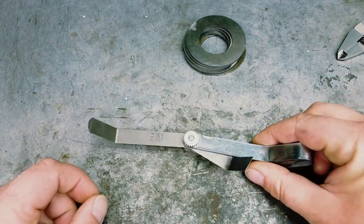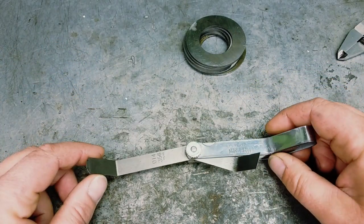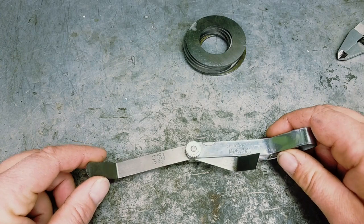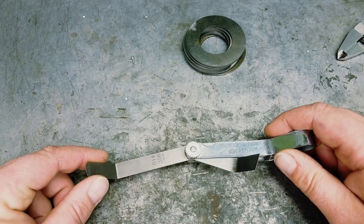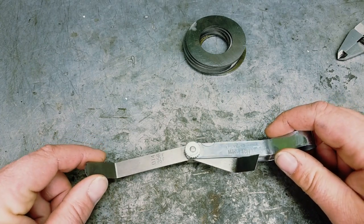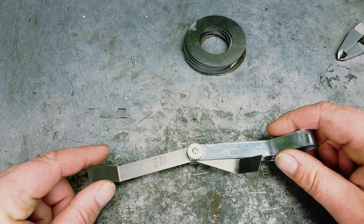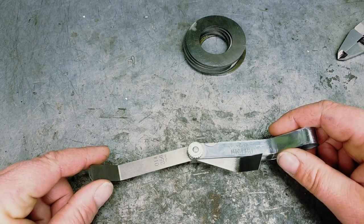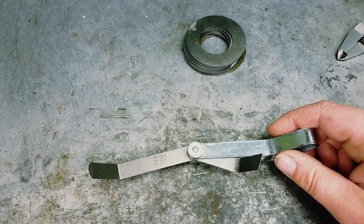You're also going to need a set of feeler gauges. The feeler gauges you get should go down to 0.05 millimeters at minimum. You probably want it to go down to 0.04 just so you can at least test to see if you're too tight.